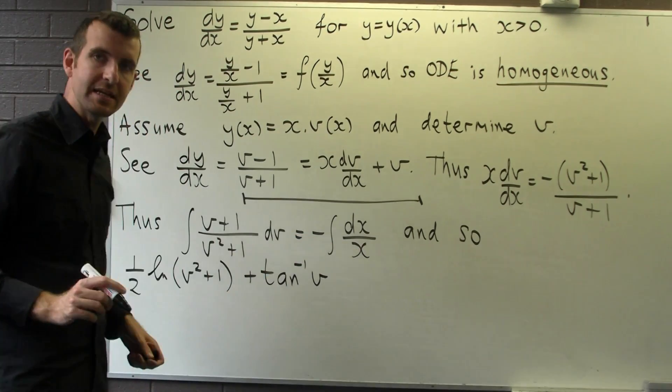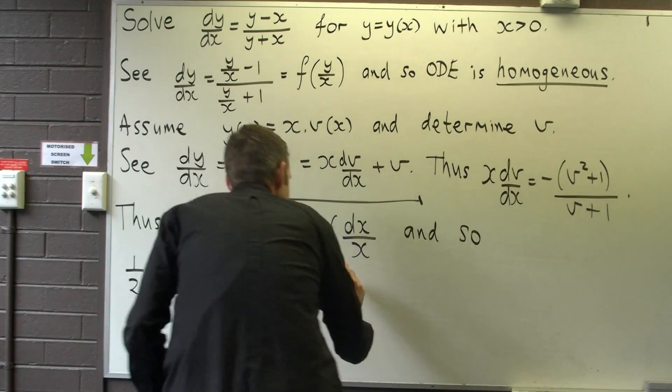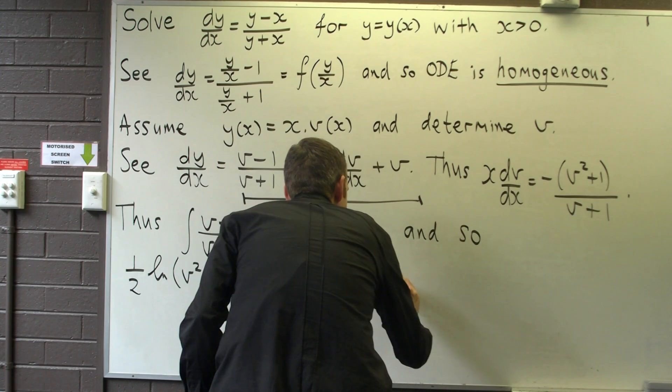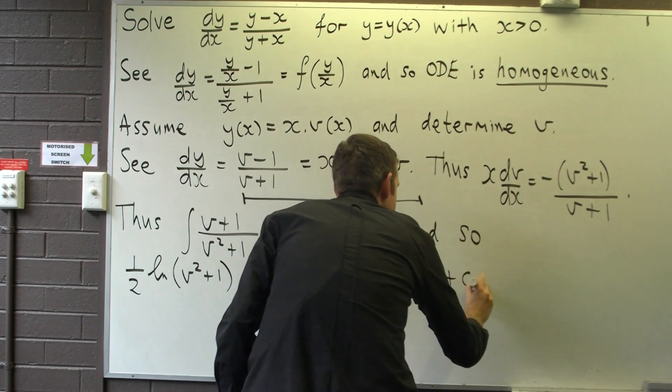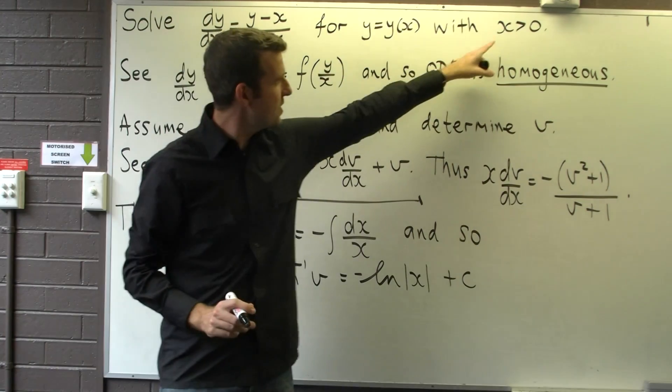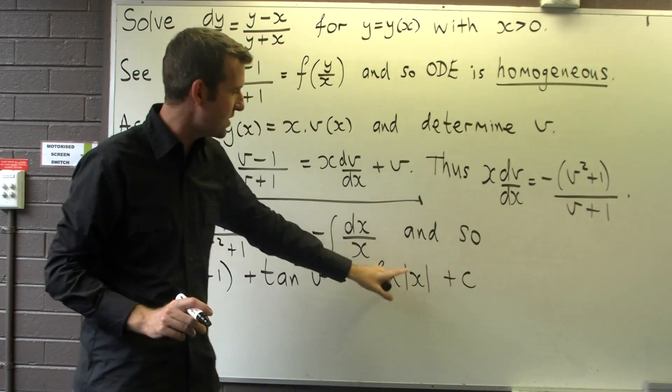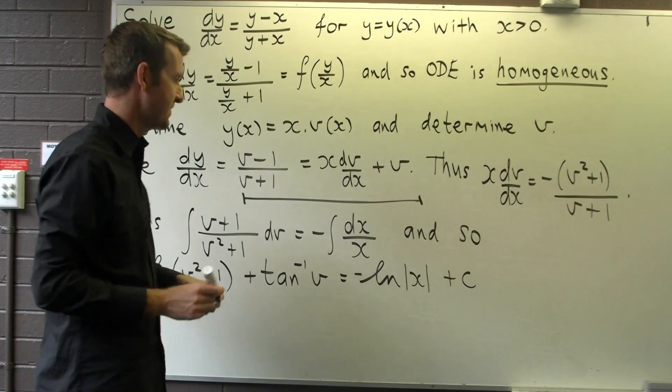Over here, I'm going to get negative log x. Now, because we're only interested in x greater than zero, I really don't need this absolute value sign here.